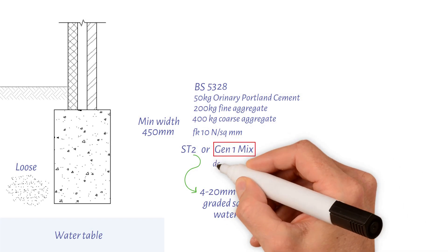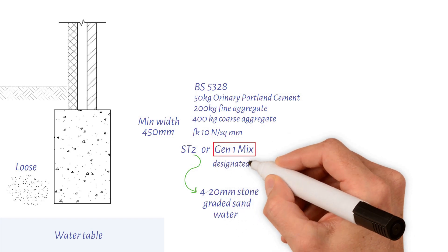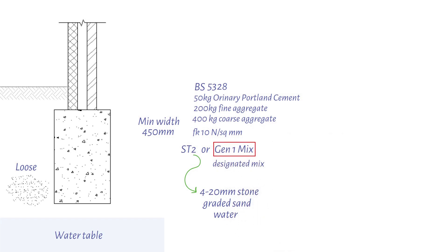GEN1 is a designated mix. BS 5328, Section 5 specifies the mix. The mix strength is also 10N per square millimeter.